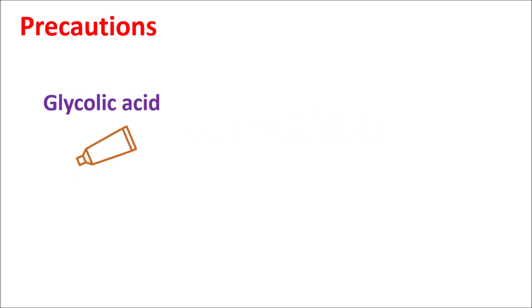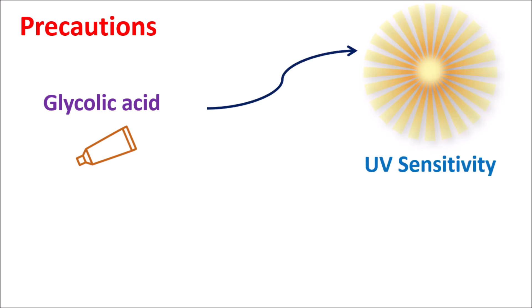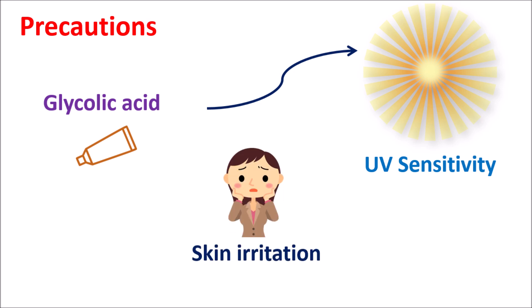One important precaution with glycolic acid concerns its concentration. When used at higher concentrations greater than 10%, it can increase UV sensitivity, leading to skin irritation and skin burning. This UV sensitivity can be reduced by stopping glycolic acid, so it is a temporary condition. That is why it is always recommended to use lower concentrations of glycolic acid to avoid skin irritation.